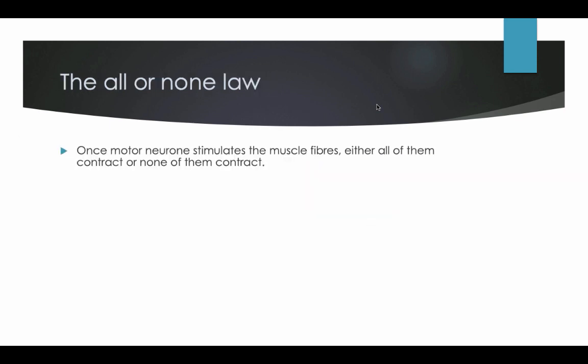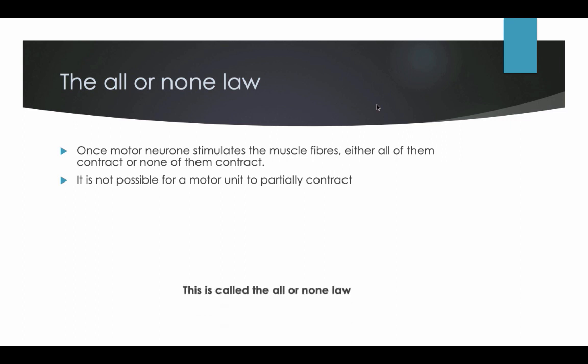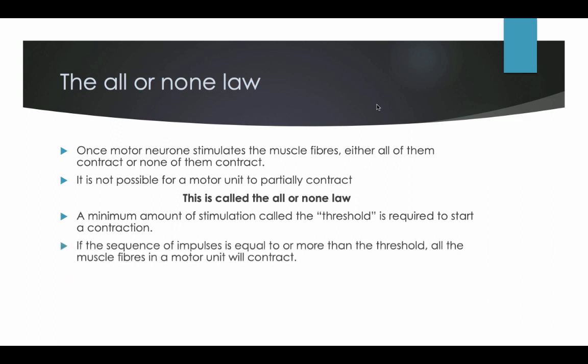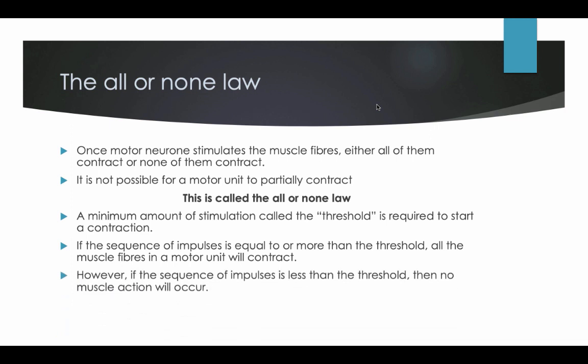The all or none law. Once a motor neuron stimulates the muscle fibres, either all of them contract or none of them contract. It is not possible for a motor unit to partially contract — this is called the all or none law. A minimum amount of stimulation, called the threshold, is required to start a contraction. If the sequence of impulses is equal to or more than the threshold, all of the muscle fibres in the motor unit will contract. If the sequence of impulses is less than the threshold, then no muscle action will occur.